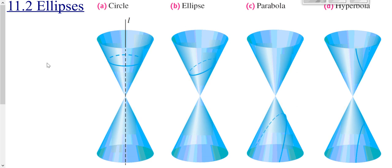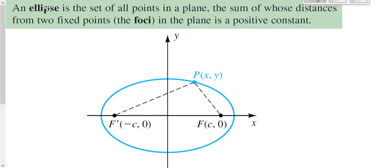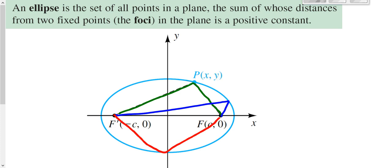Today we're going to look at ellipses. An ellipse is kind of an elongated circle. From a conic perspective, an ellipse is a set of all points whose sum of the distances from your two foci is the same. The length of this dotted line here plus the length of this dotted line here would be the same as I go from here to here. So the length of the two green together, or the length of the blue, or the length of the red, all add up to be the same.